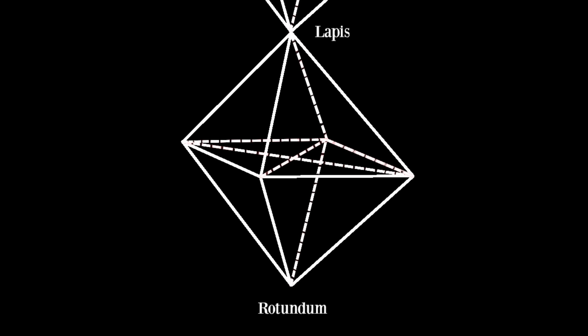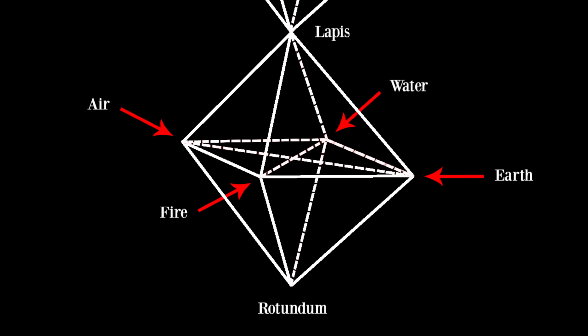The edges of the middle square are the four classical elements: earth, wind, fire, and water. The rotundum can best be understood as the chaotic state of being at the beginning of time. It is the prima materia which we discussed back in chapter 11. It is the starting point from which all other creation stems.